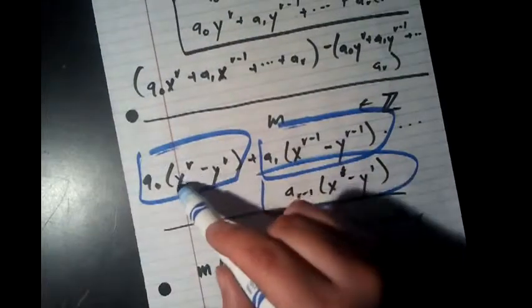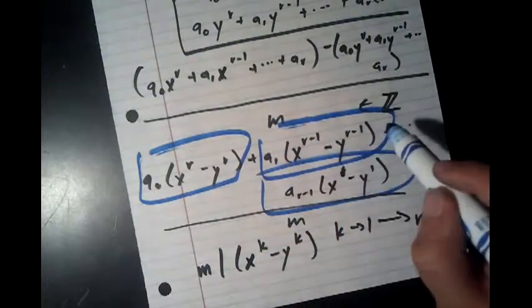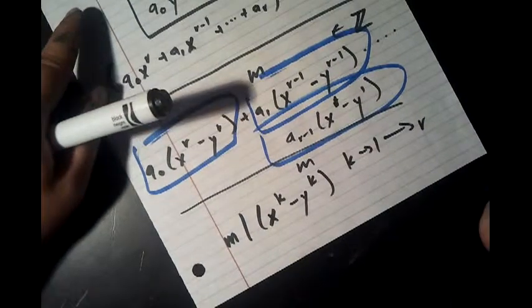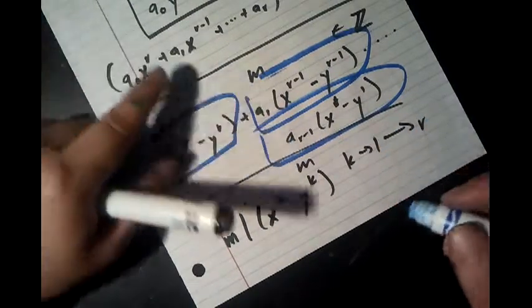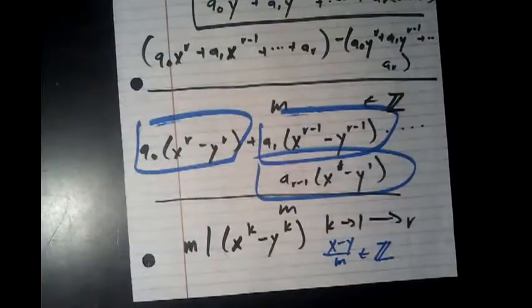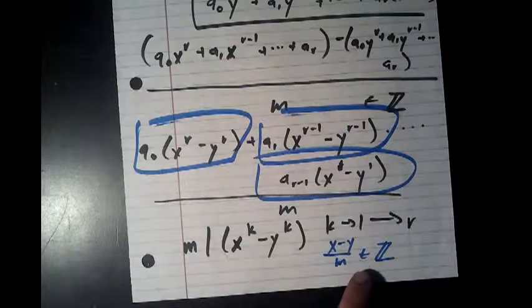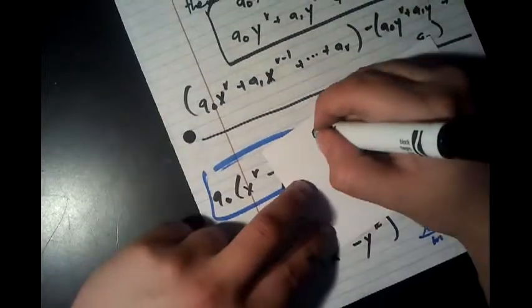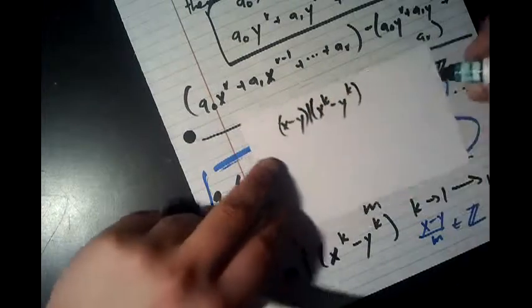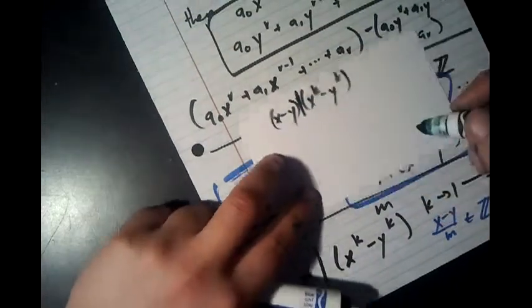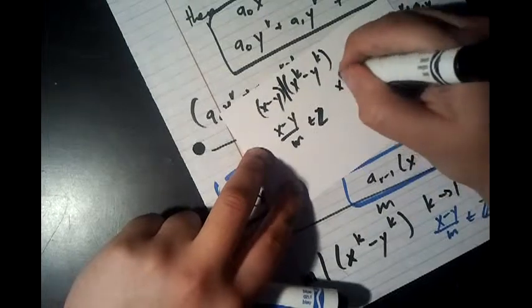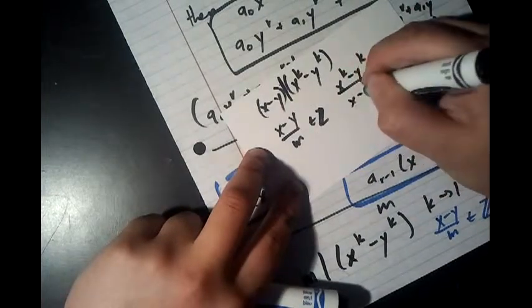And that has to be divisible by m, and that just means that m has to divide all x^k minus y^k where k goes from 1 all the way to r, because it has to divide each of these terms. And those terms all share some x^k minus y^k and the k's change, but if we can prove that m divides that one in general then we can prove it's true. And m does in fact divide that one because we know that from the initial statement x minus y over m is an integer.